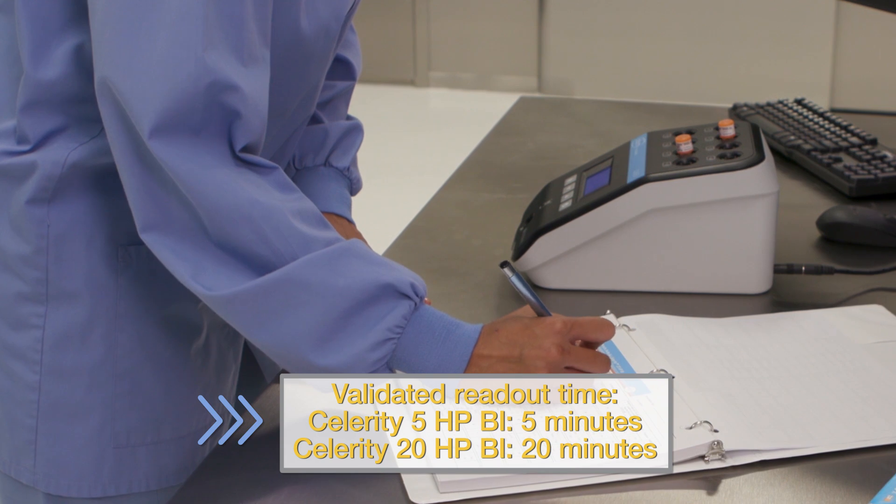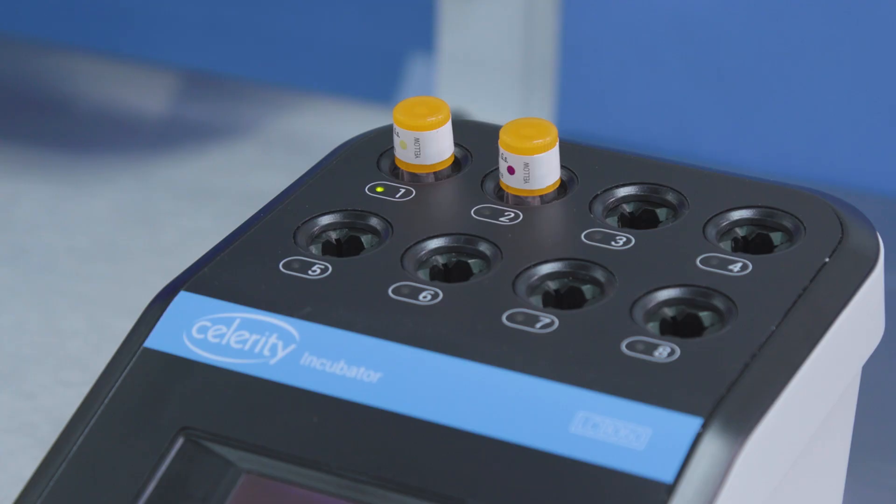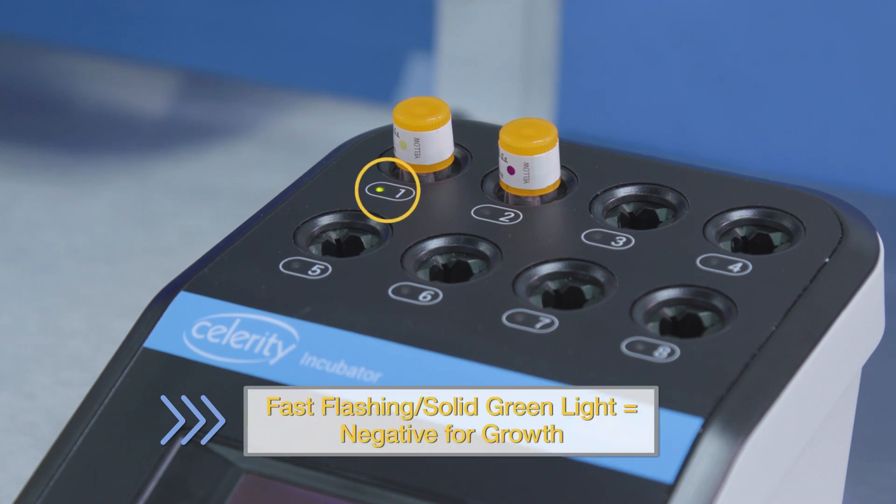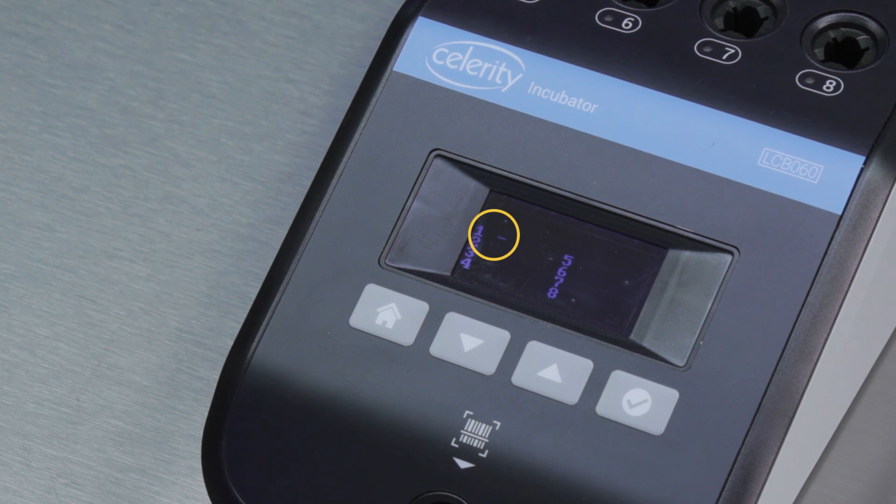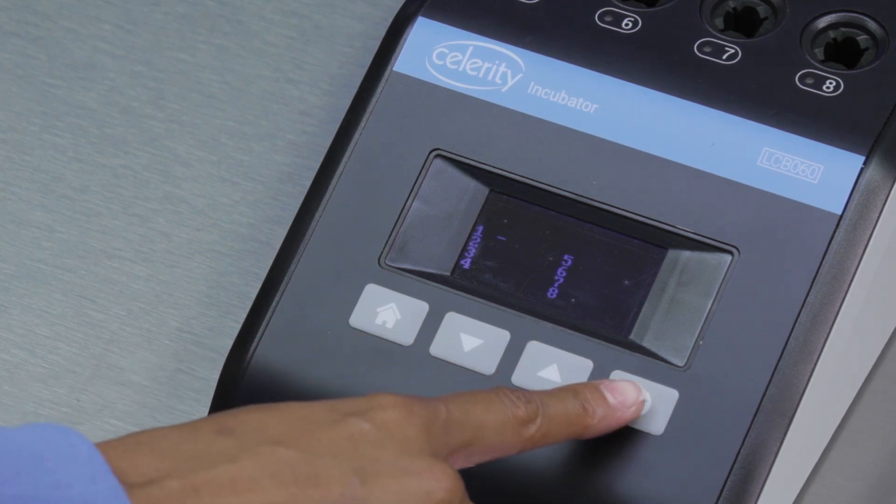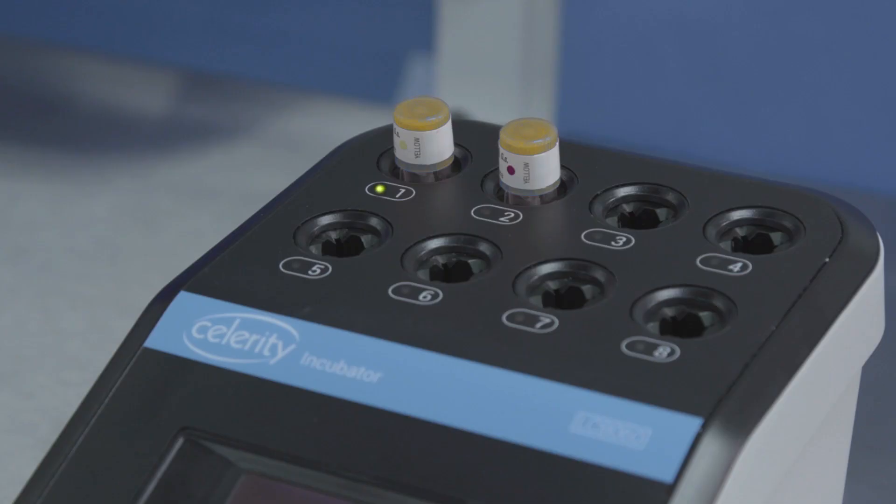Read and record the test and control BI results within the validated readout time. The BI is negative for growth when the incubator demonstrates a fast flashing green light, an optional audible alarm, and a minus sign on the screen next to the corresponding well number. Acknowledging the result will silence the alarm if buzzer mode is on, and the LED will turn solid green.